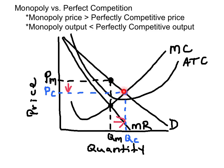MC equals D also gives us the price — it's a lower competitive price than the monopolist price. A perfectly competitive market will give us a greater area of consumer surplus and also get rid of the deadweight loss.